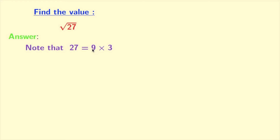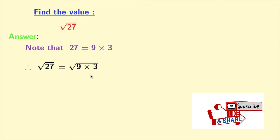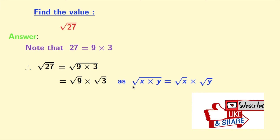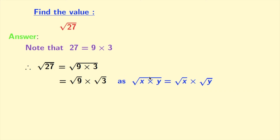Now take square root on both sides and we get square root of 27 is equal to square root of 9 times 3. Now it can be written as square root of 9 times square root of 3, as we know that square root of x times y is equal to root x times root y.